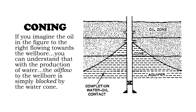If you imagine the oil in the figure to the right flowing towards the wellbore, you can understand that with the production of water, the oil flow to the wellbore is simply blocked by the water cone.